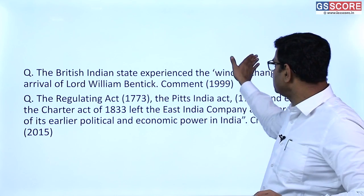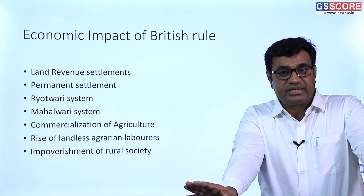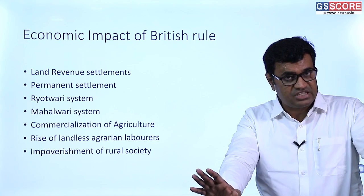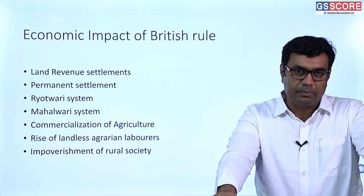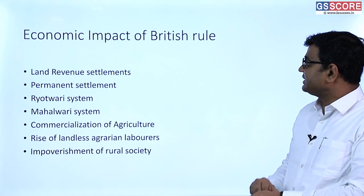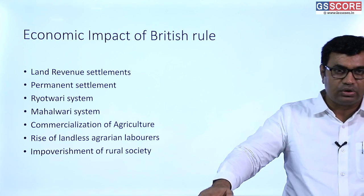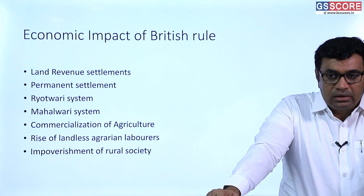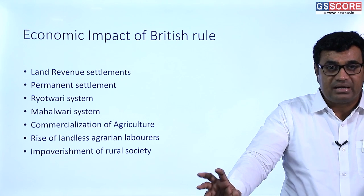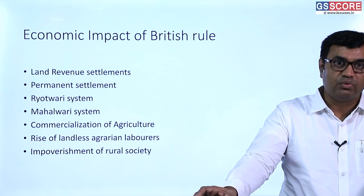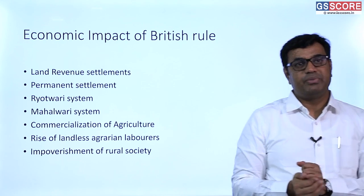We'll now move to the next topic: economic impact of British rule, one of the most important topics for History Optional. Questions are asked every year from this topic. The first major subtopic is land revenue settlements — Permanent Settlement, Ryotwari Settlement, and Mahalwari Settlement. With British arrival in India, especially in Bengal, they wanted to collect a fixed amount of revenue. They introduced the Permanent Settlement in Bengal in 1793, whereby land revenue was fixed on a permanent basis.